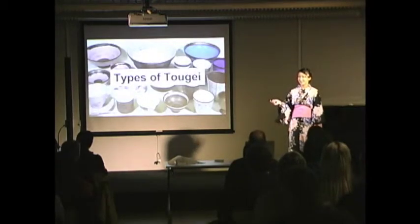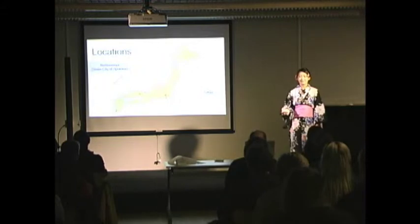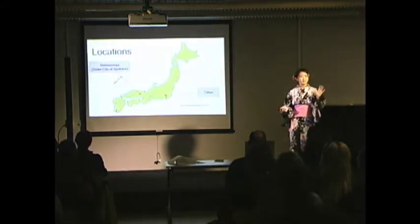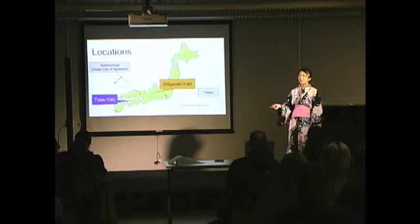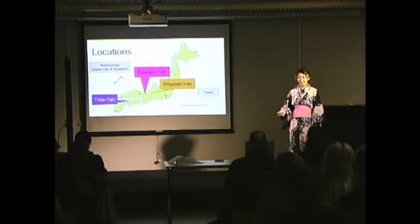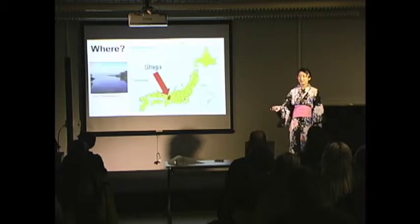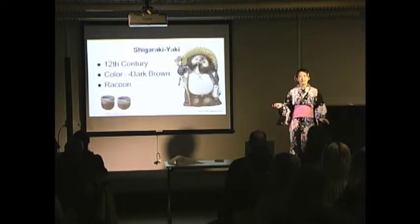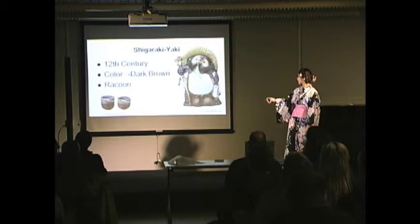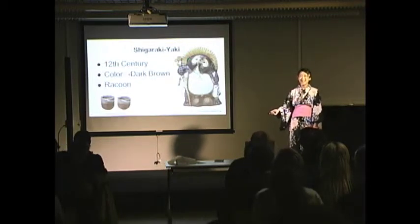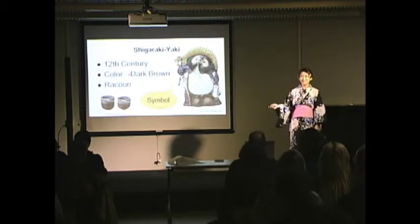Let's move on to types of togei. There are a lot of pottery styles all over Japan. Today, I will discuss three of them: Shigaraki yaki, tobe yaki, and kiyomizu yaki. First is Shigaraki yaki. It is made in Shiga prefecture, and it was started in the 12th century. This pottery has a dark brown color, and its symbol is the raccoon.